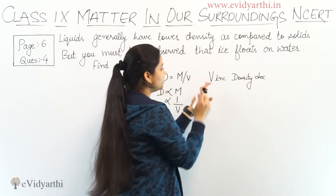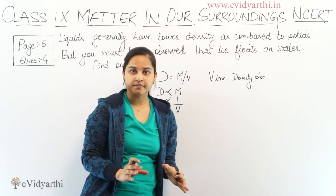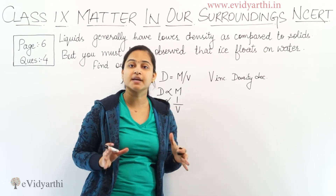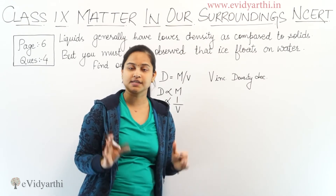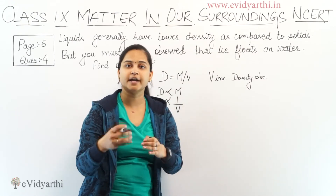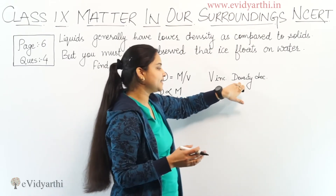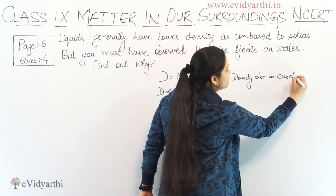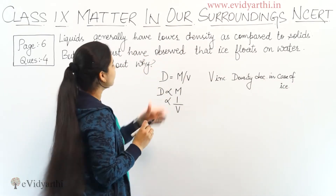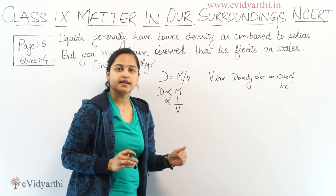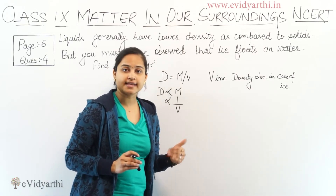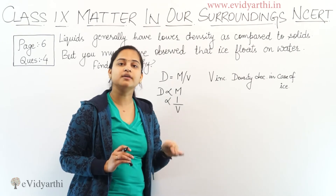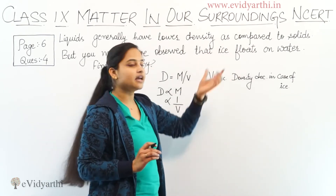The volume of ice is more than water. The volume of ice is greater than the volume of water. Therefore, the density of ice is lower as compared to the density of water. Therefore, ice floats in water.